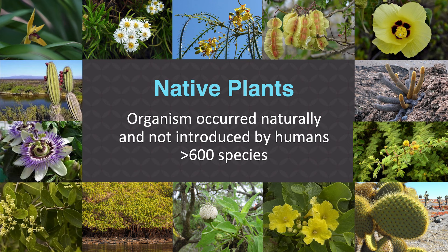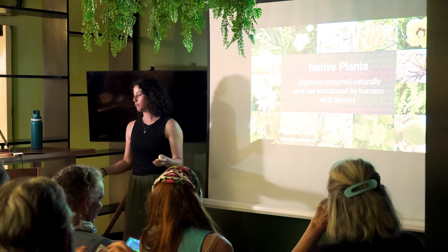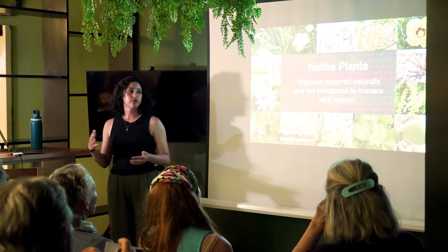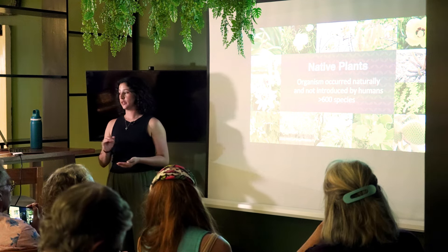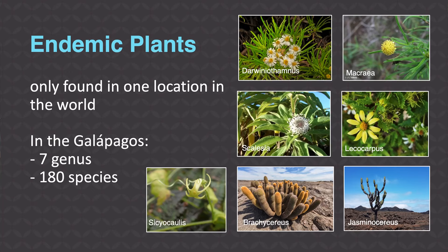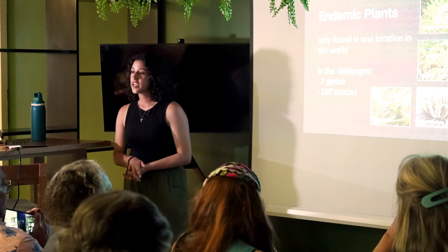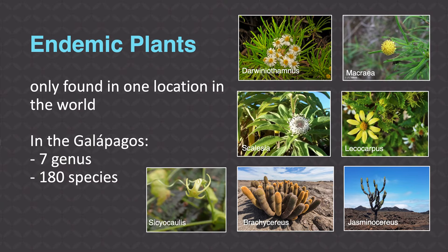When talking about plants, we must discuss native plants. In the Galapagos Islands, there are over 600 species of native plants. A native plant is an organism that occurred naturally and was not introduced by humans — brought by an animal, wind, or other force of nature. More specifically, endemic plants are native plants only found in one location in the world — in our case, only in the Galapagos Islands. There are over 180 species of endemic plants in the Galapagos.